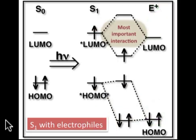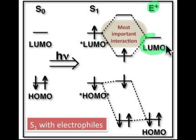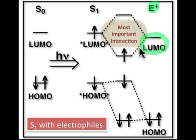Now let's take a look at the case of an electrophile interacting with another molecule that's in the excited state. The typical levels of an electrophile will place the LUMO low in energy. The HOMO of an electrophile is likely to be extremely low in energy — so low, in fact, that it's unlikely to significantly interact with the HOMO star. That means the closest energy levels and the most important interaction is going to be between the empty LUMO level and the partially filled LUMO star, making the LUMO star behave like the nucleophile.